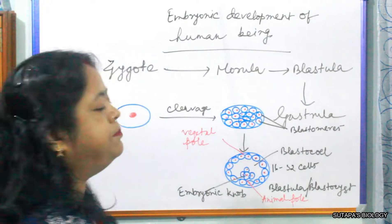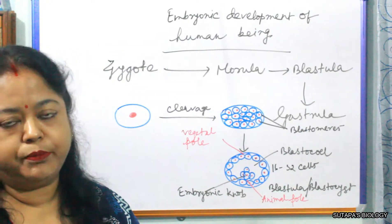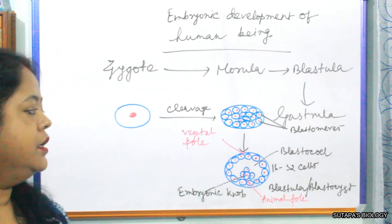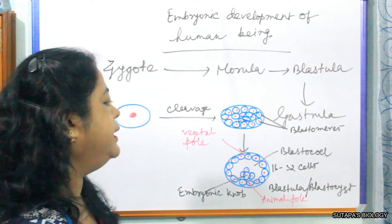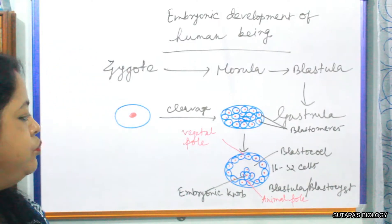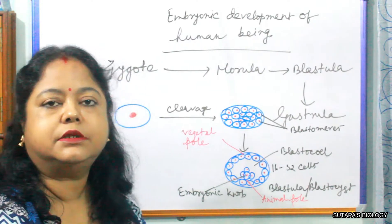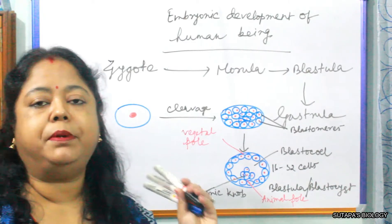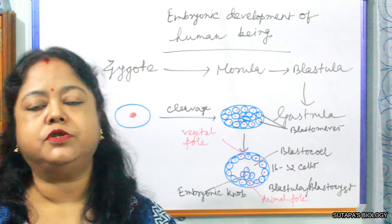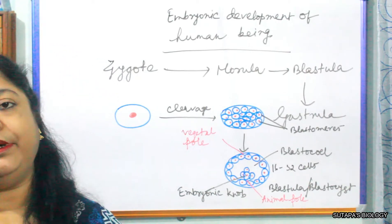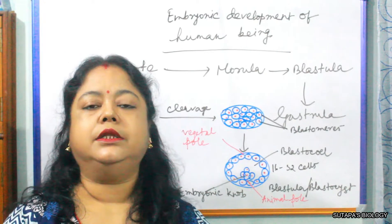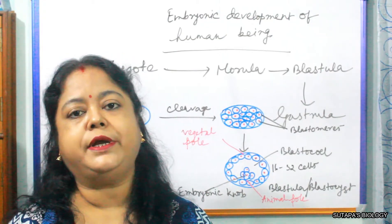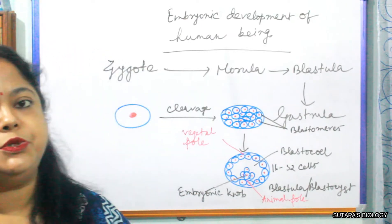The blastula gets implanted in the endometrium. In this period, the blastula comes within the endometrium. This is very important — in board exams and competitive exams, many question papers ask at which stage the human embryo gets implanted, and that is the blastula stage.